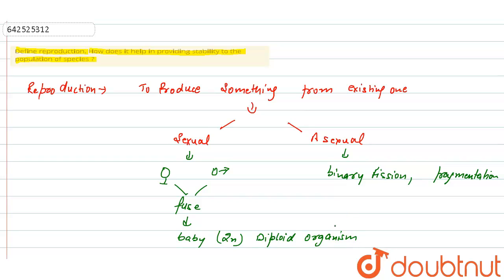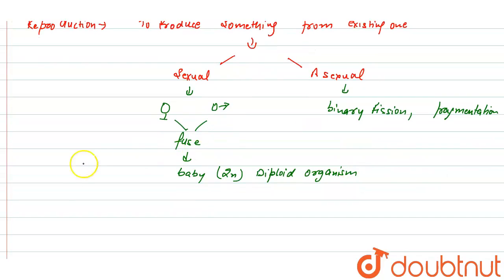So this is called as reproduction. Reproduction is the process in which there is production of new offspring from the existing parents. So this is the definition of reproduction. Now look at the stability. If we look at the stability, we know that due to harmful effect of the environment there is random death of the organism due to which extinction can happen.